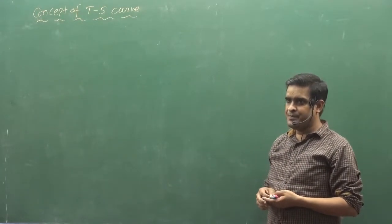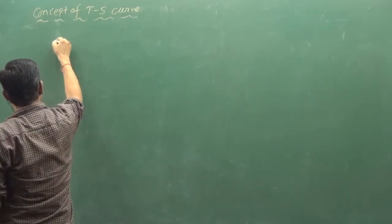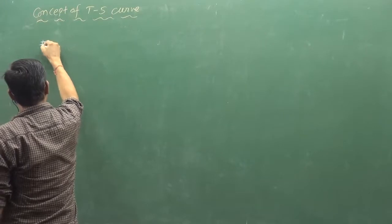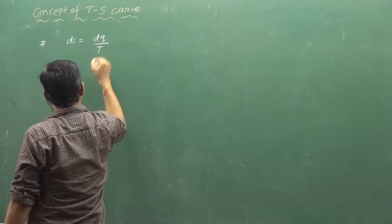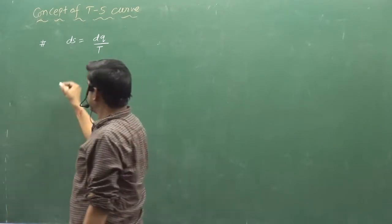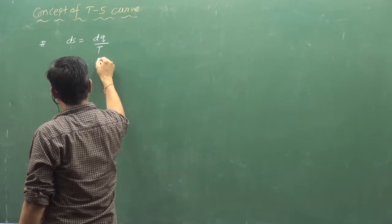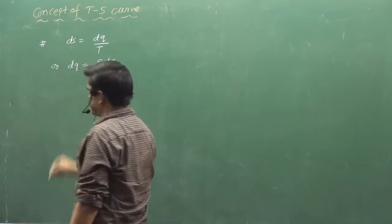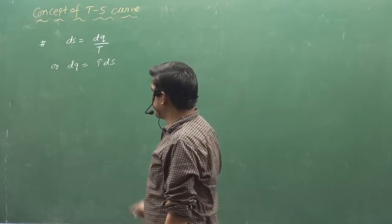It is very easy. When you do the curve, tell us first, if you know, what is DQ by T? You can say it like this: what is DQ equal to? T delta S. So this is DQ.